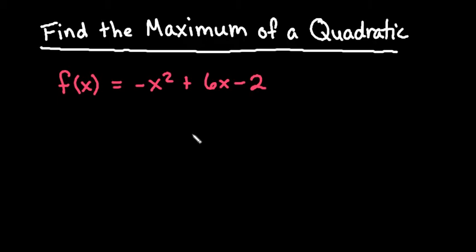I know that this is going to be a maximum because of the fact that there is a negative in front of x squared, which tells me that my parabola opens upside down. So anytime your graph opens upside down, then you would have a maximum value at this point.